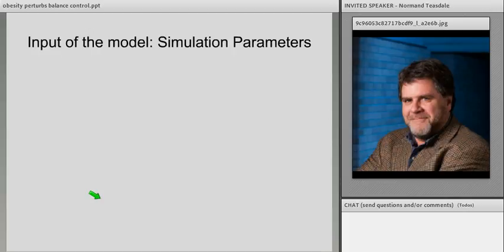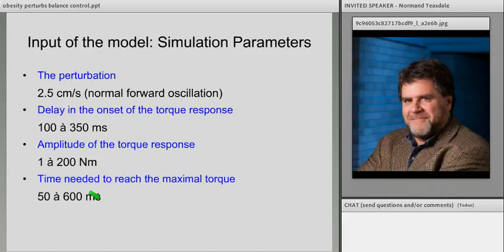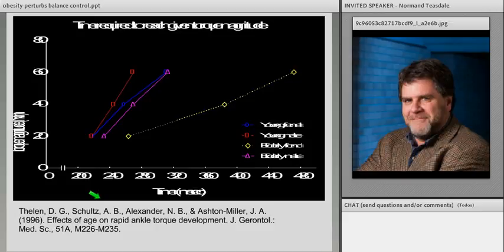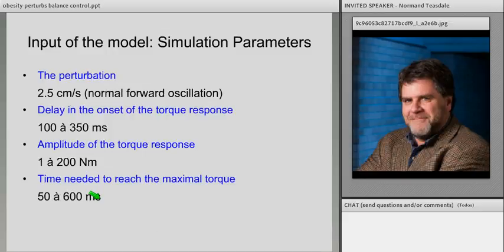So the input of the actual model in this particular case was the perturbation, which was 2.5 centimeters per second. So that's a normal forward oscillation. So the model, we simply applied a 2.5 centimeter per second perturbation and moving it forward. We had the delay in the onset of the torque response. So 100 to 350 milliseconds before we started to apply the torque response to stabilize the body. We varied the amplitude of the torque response, which could be from 1 to 200 Newton meters. And we varied as well the rate of torque of the stabilizing response by reaching the torque in 50 to 600 milliseconds.